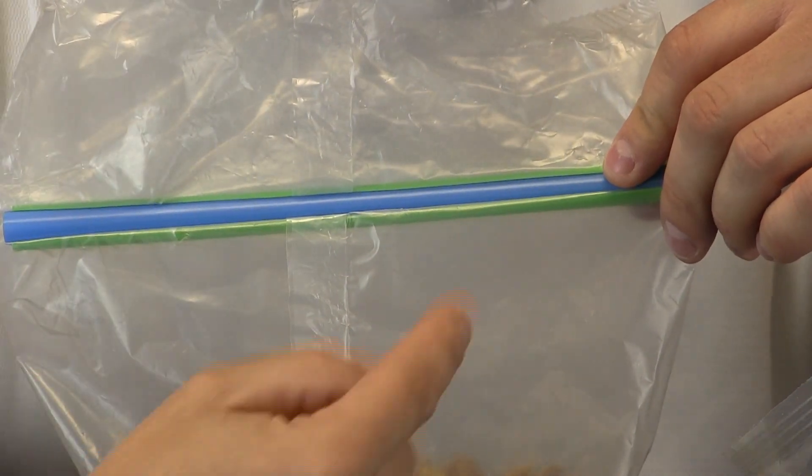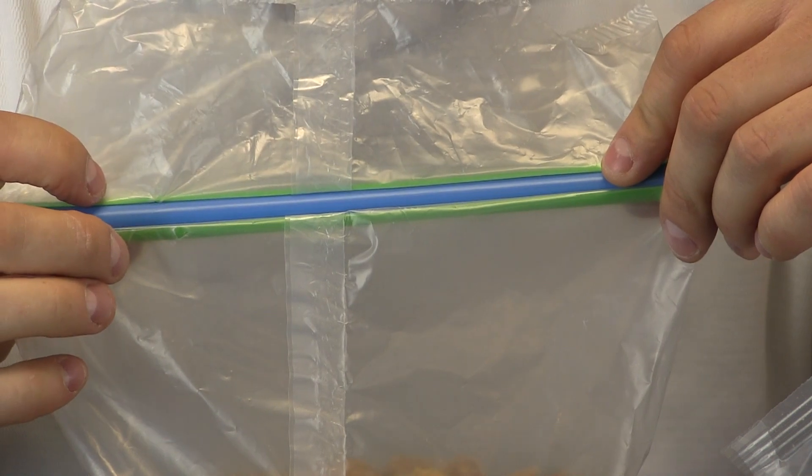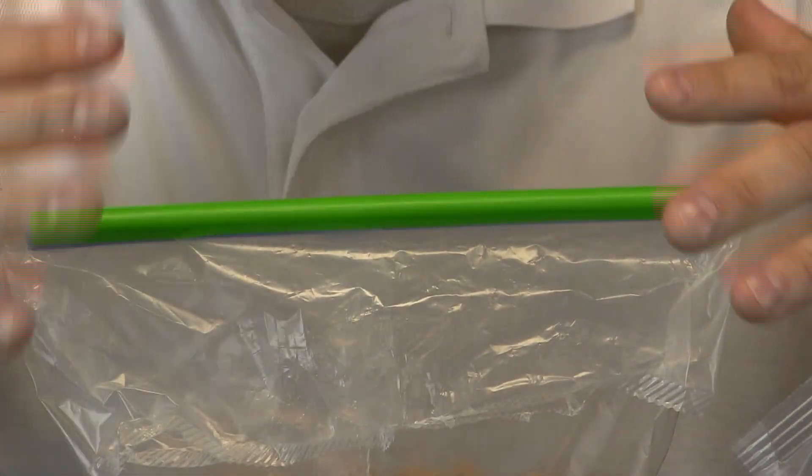So we have zoomed in so you can see how our baggie is working here. We have the blue center ridge, we have the green lines, and the groove going around it. And it works just like a Ziploc baggie.